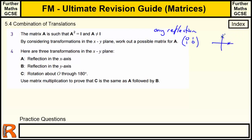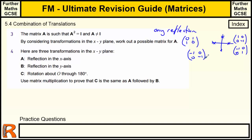Other valid options include: reflection in the x-axis — (1,0) stays, (0,1) goes to (0,−1) — giving [[1,0],[0,−1]]; or reflection in the y-axis where (1,0) goes to (−1,0) and (0,1) stays, giving [[−1,0],[0,1]]. A 180-degree rotation also works: (1,0) goes to (−1,0) and (0,1) goes to (0,−1), giving [[−1,0],[0,−1]]. All of these, when multiplied by themselves, return to the identity.